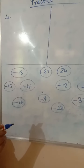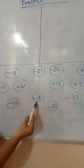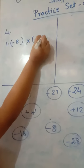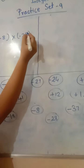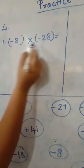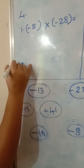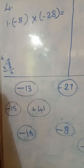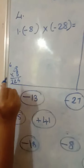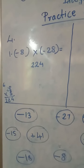For example, I am taking two negative numbers: negative 8 into negative 28. When both signs are negative, the answer will of course be positive. Doing the multiplication in rough work: 8 eights are 64, 2 eights are 16, 16 plus 6 is 22 — so the answer is 224, and it is positive because both signs were negative.